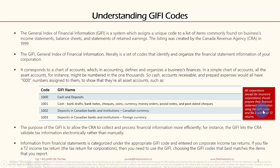The purpose of GIFI is to allow the CRA to collect and process financial information more efficiently. For instance, GIFI lets the CRA validate tax information electronically rather than manually. Information from financial statements is categorized under the appropriate GIFI code and entered on corporate income tax returns. If you file a T2 income tax return — the tax return for corporations — you need to use GIFI, choosing the codes that best match the items you report.